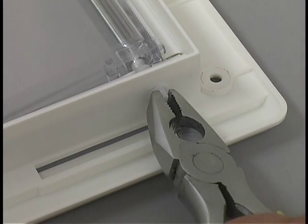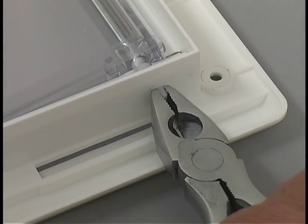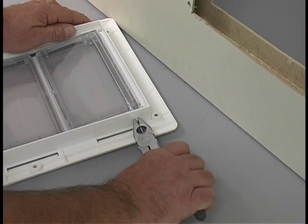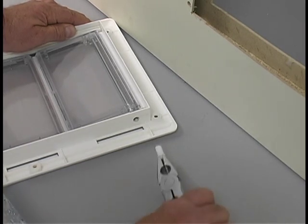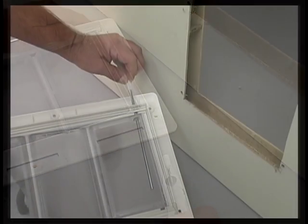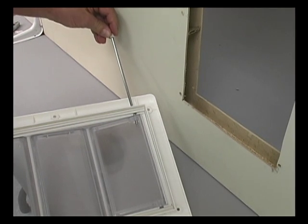With the frame lying flat, use pliers to gently loosen and remove one of the caps. Slide the rod out completely from the opposite side.